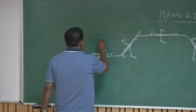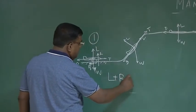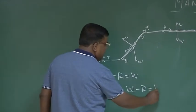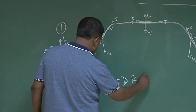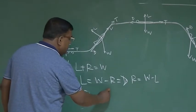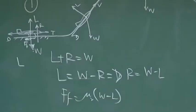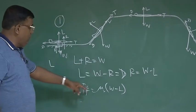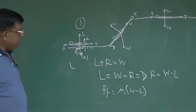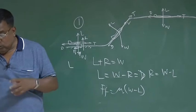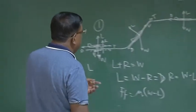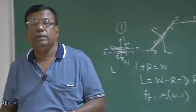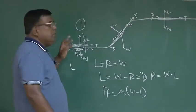So here, in the first phase going for takeoff, I write L plus R equal to W, or lift equal to W minus R, which implies R equal to W minus L, and frictional force is mu_rolling into (W minus L). So L plus R is W, fine. L equals W minus R, friction mu into R equals W minus L. Now you could see one thing: if you make lift equal to weight in this phase, the moment W equals L, friction force will become 0. Now imagine — if the friction on the ground is 0, can the wheel rotate? That is why I am telling you, lift is not equal to weight during takeoff.